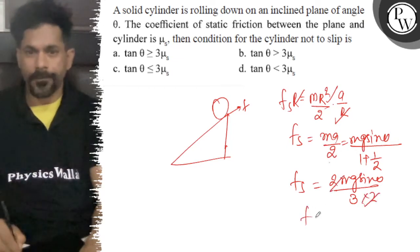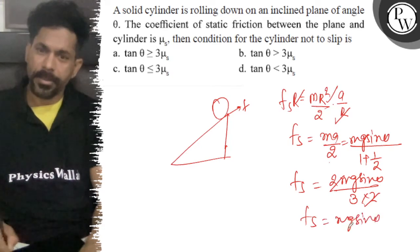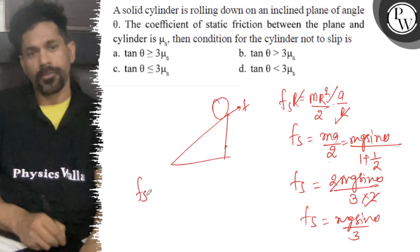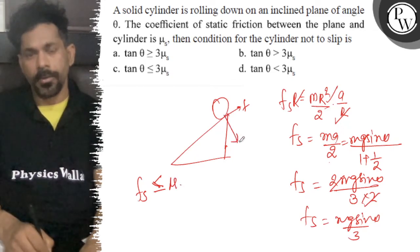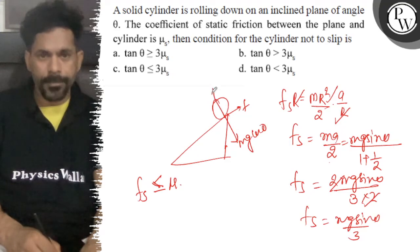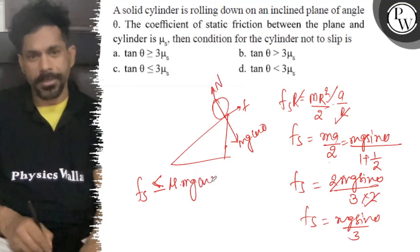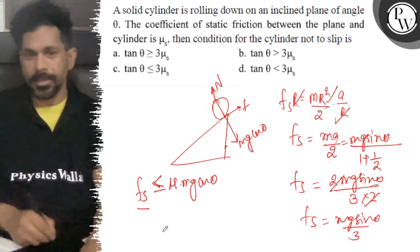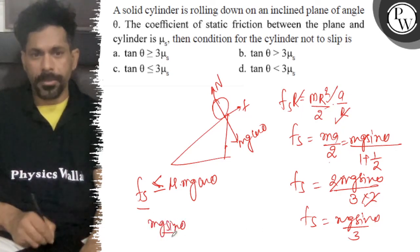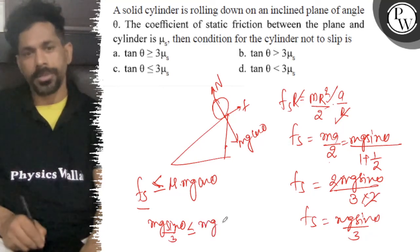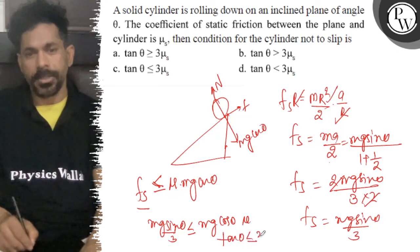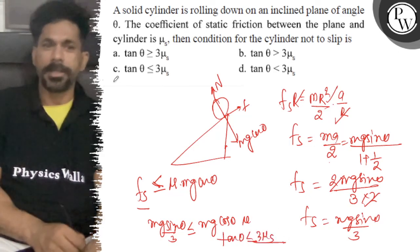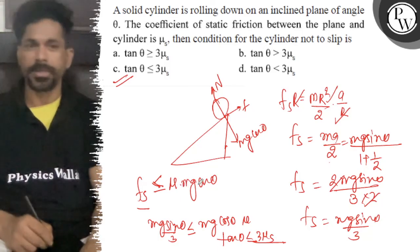So f static equals m g sin theta by 3. This should be less than or equal to mu s times m g cos theta. Therefore, the condition is tan theta less than or equal to 3 mu s. So the correct answer is tan theta ≤ 3 mu s, and option C is correct.